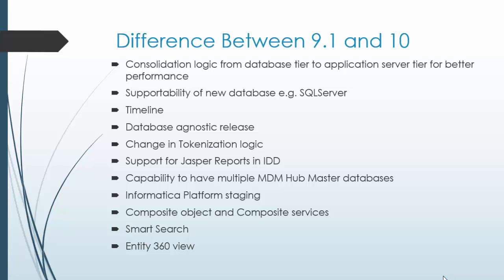Informatica Platform Staging is a version 10 feature that eliminates the landing table concept. Data is directly pushed to the staging table instead of the landing table, saving loading time. The next concept is Composite Object and Composite Services, a new feature in version 10 providing a more robust IDD application. Smart Search and Entity 360 Degree View are also cool features of Informatica 10 that give a better user experience for business users.